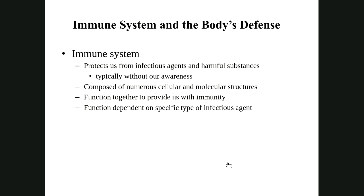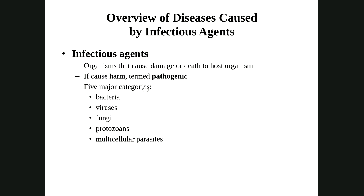The immune system protects us from infectious agents and harmful substances. We don't tend to call them infectious agents — a lot of times we call them pathogens. A pathogen is a type of infectious agent, and these are pathogenic, meaning they can generate disease. There are five big groups, but we mainly talk about the first two: bacteria and viruses. These are the main two infections that we tend to think about.